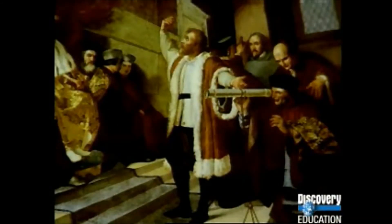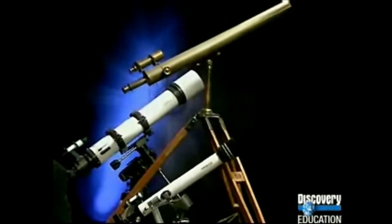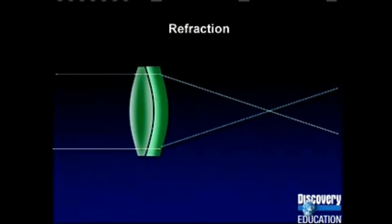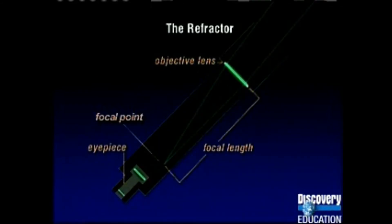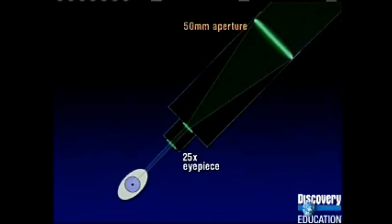Some telescopes have huge lenses and complex motors to slowly spin the telescope so it stays focused as Earth spins. The first telescopes were refracting telescopes shaped like long tubes with two lenses - a larger objective lens at the front that bends light forming an image at the focal point, and a smaller eyepiece at the end. As light enters the eyepiece it is refracted again and continues to the viewer's eye.